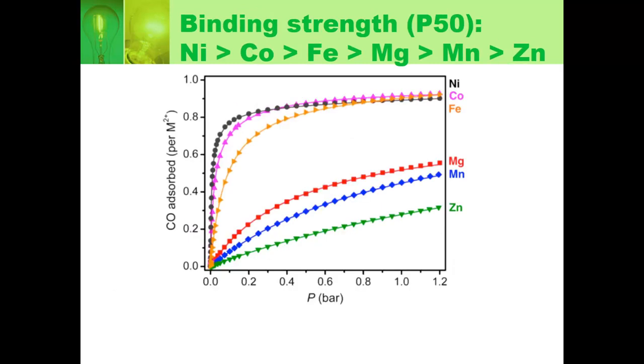If you do binding strength, binding strength is related to bond length, but it's a different technique that measures it, so you use a technique to measure binding strength, how much CO binds, and you can see that you have the best binding one, the black line, which is nickel, and the worst binding one, the green line, which is zinc. In between, you have some that are closer to others, but you have the same extremes. The shortest bond, strongest binding.